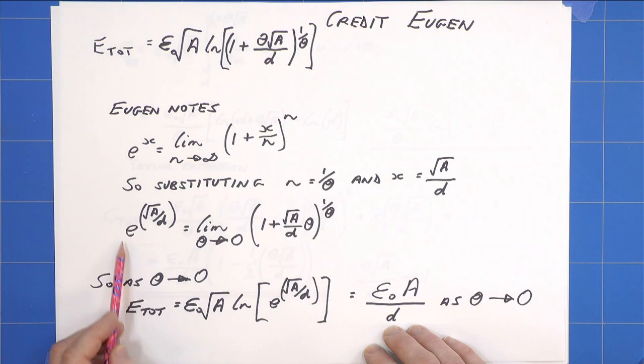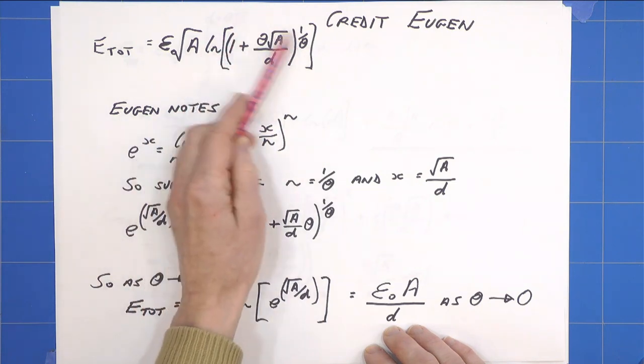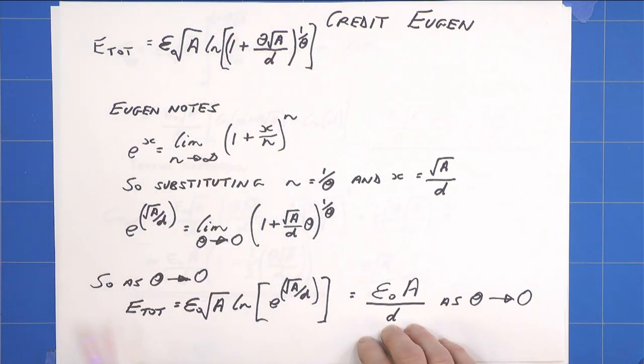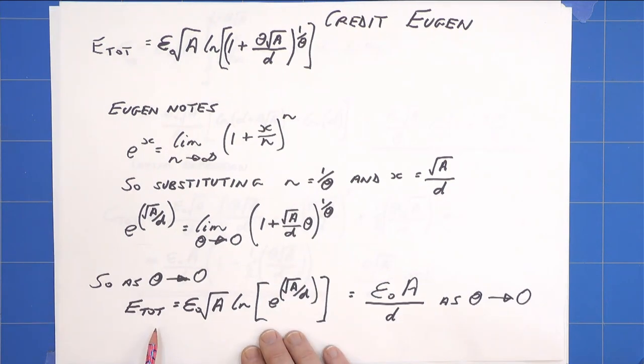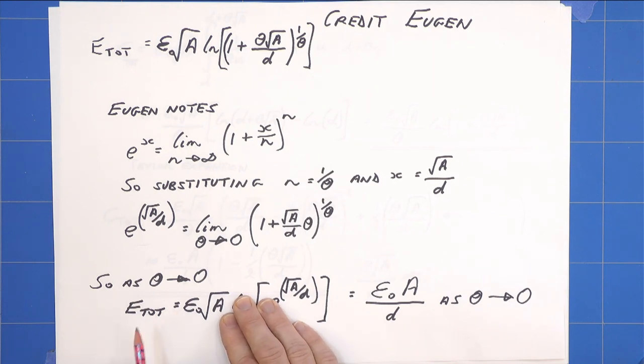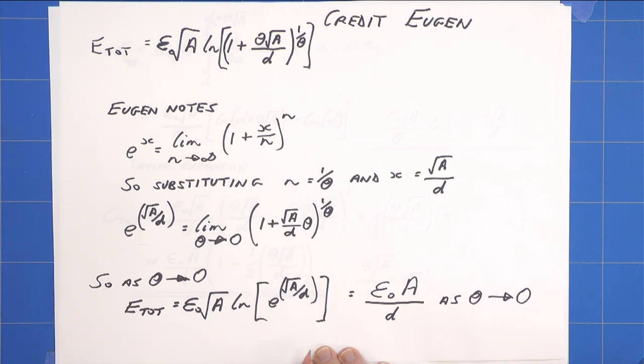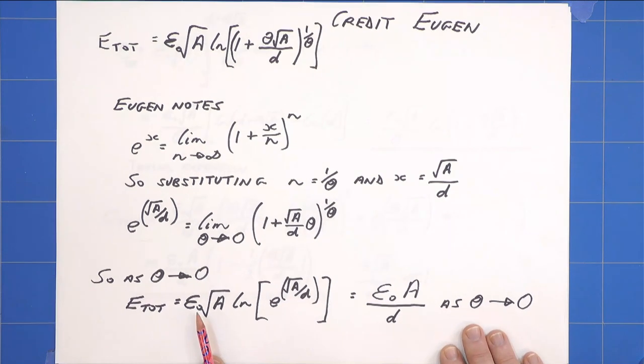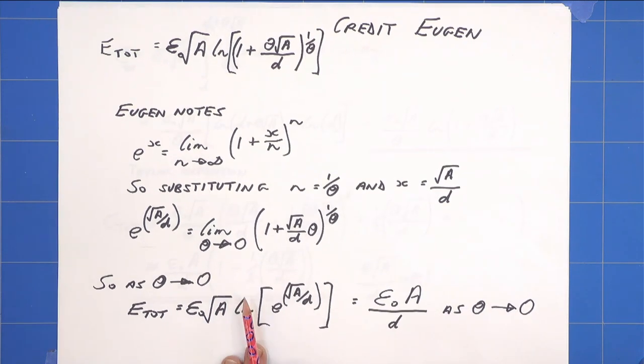So we now substitute that back in up here, instead of all this, and we get E total equals epsilon naught root A, natural log of e to the root A over D. Well, the natural log and the e will cancel each other out, and that simply means we get epsilon naught root A times root A over D, which Eugen correctly and rather cleverly sees is the result for a parallel plate capacitor as theta goes to zero. I think that is a very stylish end to the problem.